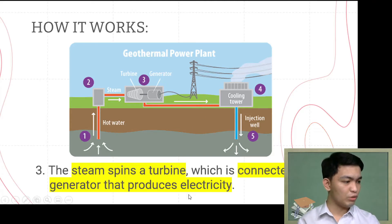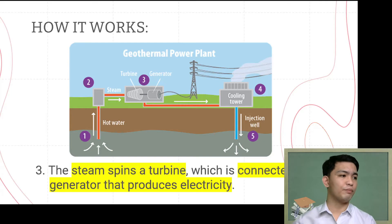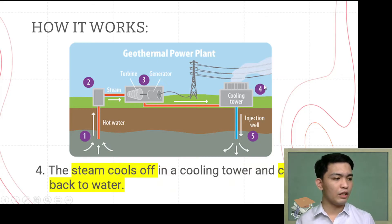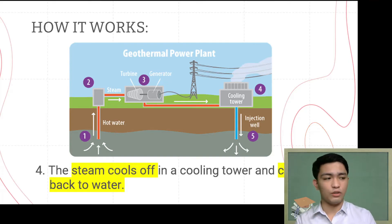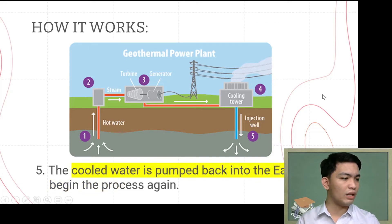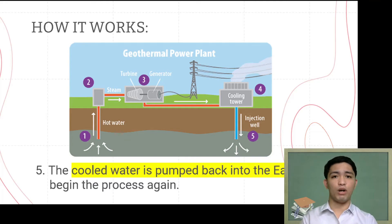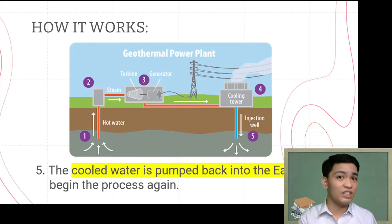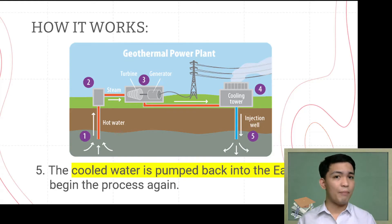Fourth, the steam cools off in a cooling tower. As the temperature decreases, the steam condenses and turns back into water. Fifth, through an injection well, that cold water is pumped back into the earth to begin the process again. The now-cool water goes back underground, gets heated again, is pumped back up, turns into steam, spins the turbine, generates electricity, gets sent to households, cools down, and the cycle repeats over and over again.